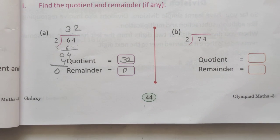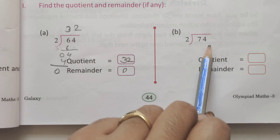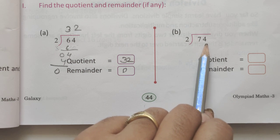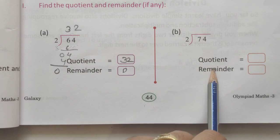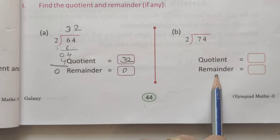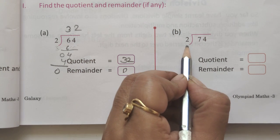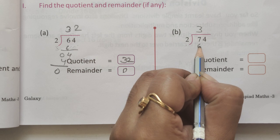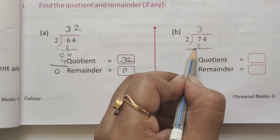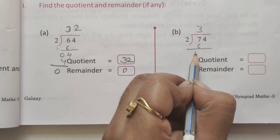Next example is B: 74 divided by 2. The dividend is 74 and the divisor is 2. Find the quotient and remainder. Let's start. 2 threes are 6. 7 subtract 6 equals 1. Next number is 4.